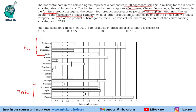All other subcategories belong to the office supply product category. So there are 3 categories: furniture, office, and technology. For each product subcategory, there is a vertical line indicating the sales of the corresponding subcategory in 2019. So the bars represent 2020 sales, and the vertical lines represent 2019 sales.